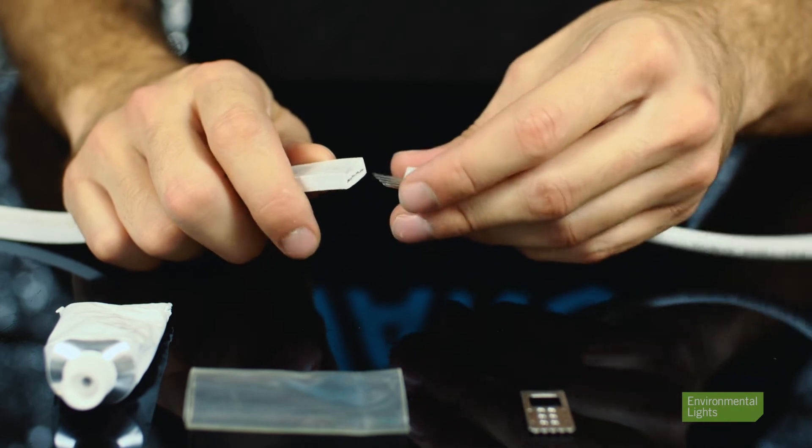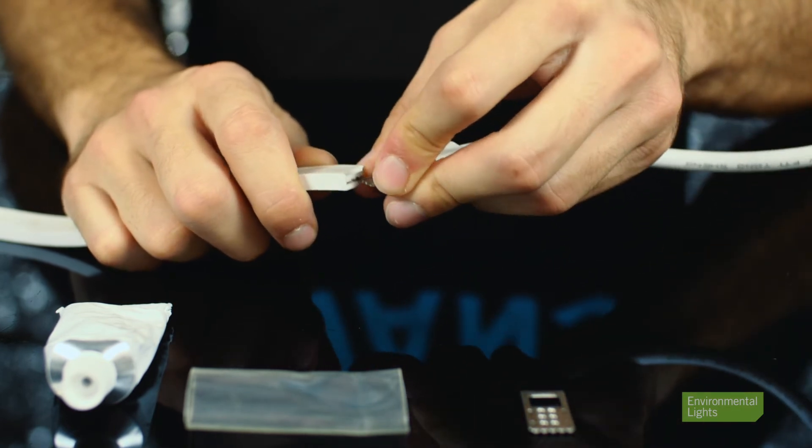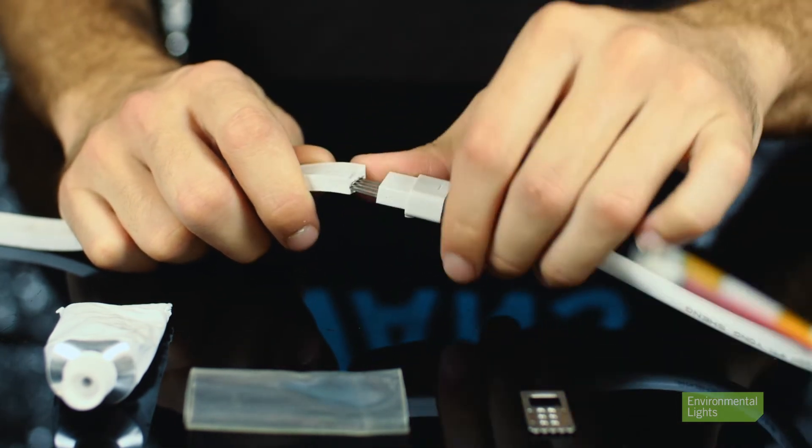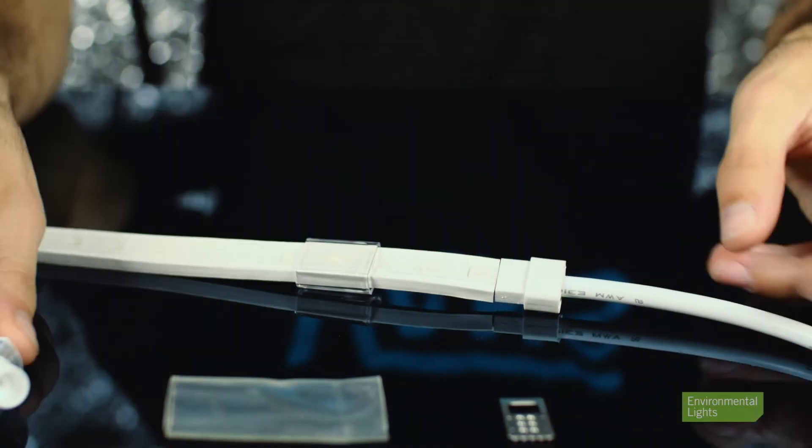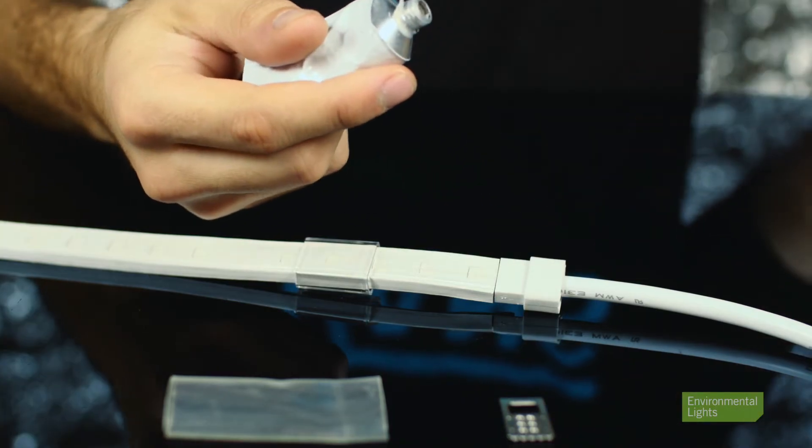Next slide the connector into the rope. Here we recommend using a bit of sealant where the connector meets the rope.